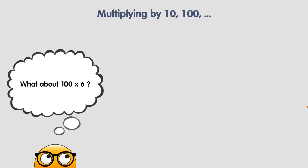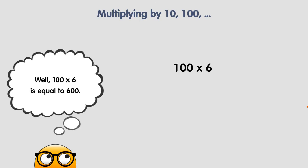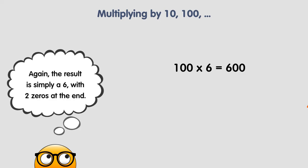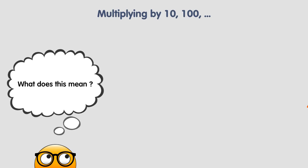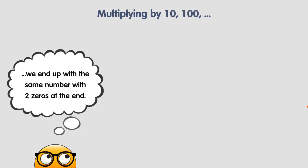What about 100 times 6? Well, 100 times 6 is equal to 600. Again, the result is simply a 6 with two zeros at the end. What does this mean? It means that when we multiply a number by 100, we end up with the same number with two zeros at the end.